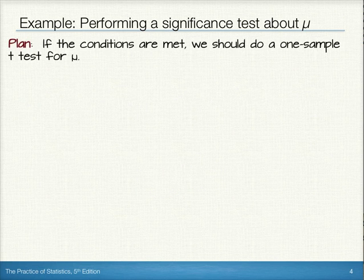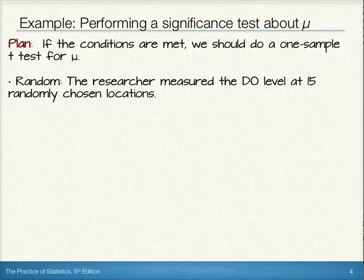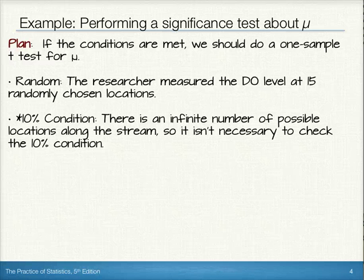If the conditions are met, we should do a one-sample t-test for mu, so let's check the conditions. First of all, the researcher measured the DO level at 15 randomly chosen locations, so our random condition is met. For our 10% condition, we notice there's an infinite number of possible locations along the stream, so it isn't really necessary to check that condition.